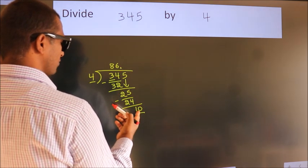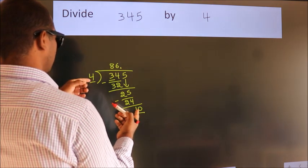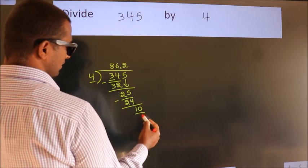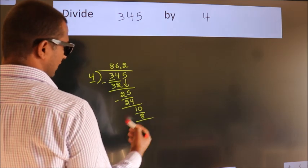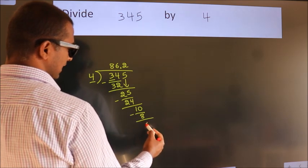A number close to 10 in 4 table is 4 times 2, 8. Now we subtract. We get 2.